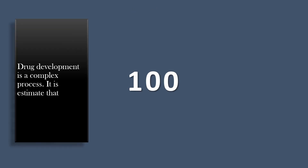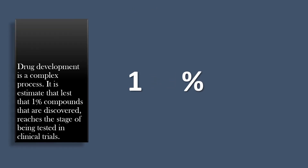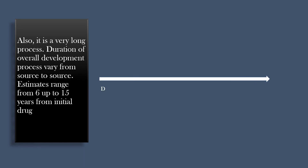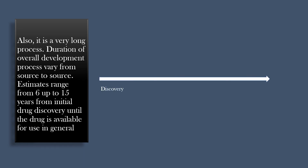Drug development is a complex process. It is estimated that less than 1% of compounds that are discovered reach the stage of being tested in clinical trials. It is also a very long process; estimates range from 6 up to 15 years from initial drug discovery until the drug is available for use in the general public.